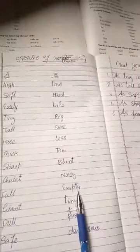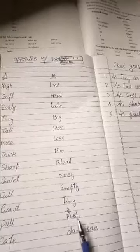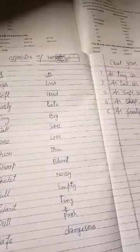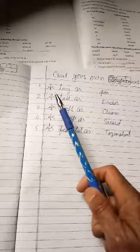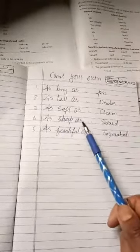Giant-tiny, pull-push, safe-dangerous. Another question is we have to create comparisons from these sentences: as tiny as pin, as tall as dude, as soft as cream, as sharp as sword, as beautiful as Taj Mahal.